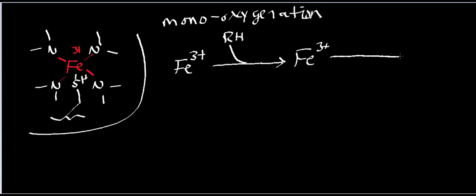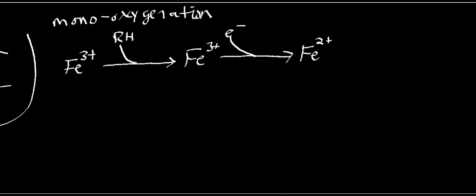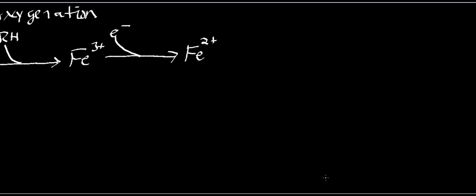The next step is going to be an electron transfer. If we're talking about a mitochondrial P450 like the cholesterol side-chain cleavage enzyme, the electrons are going to come from adrenodoxin. They'll come from different carriers if it's a microsomal P450. Ultimately, the electrons are going to pass one at a time. An electron comes in, and what does that do? It's going to reduce this iron to a 2+ charge.